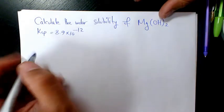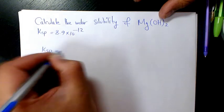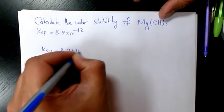Ksp is the solubility product constant, which is Ksp equals 8.9 times 10 to the power of negative 12.